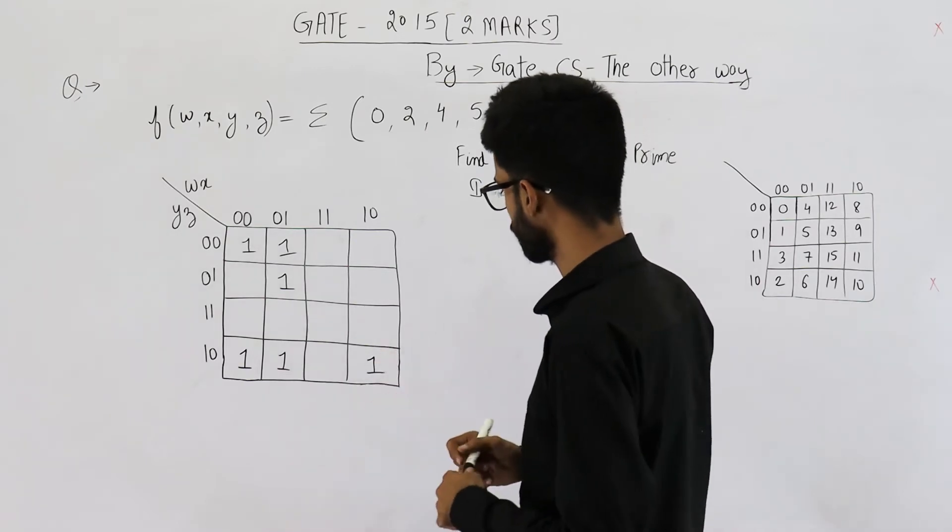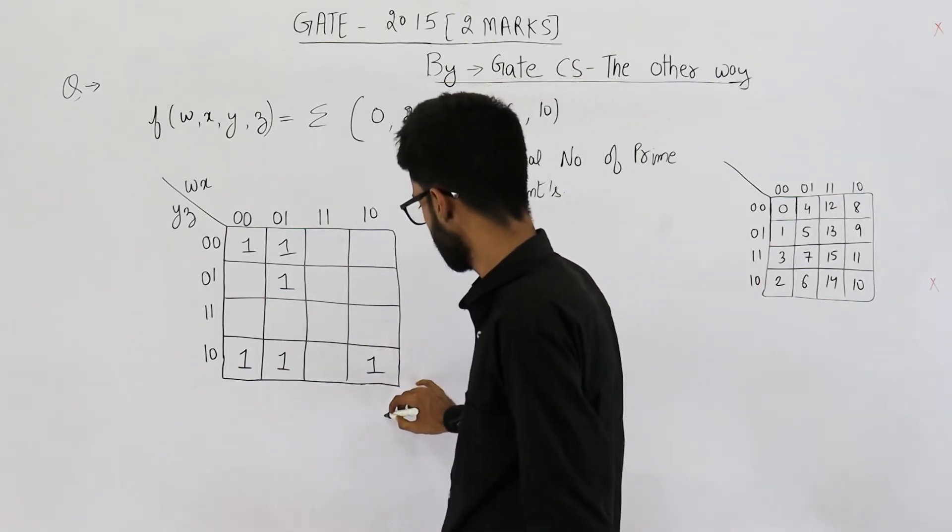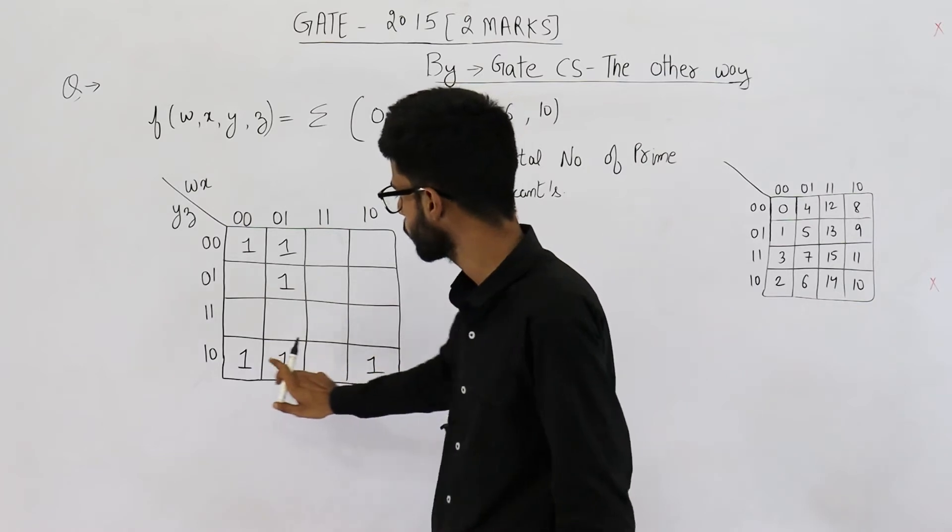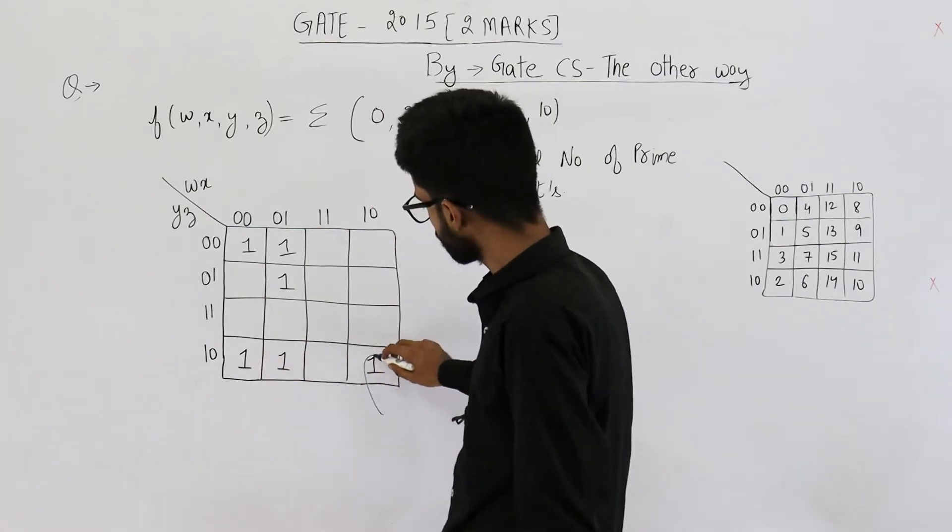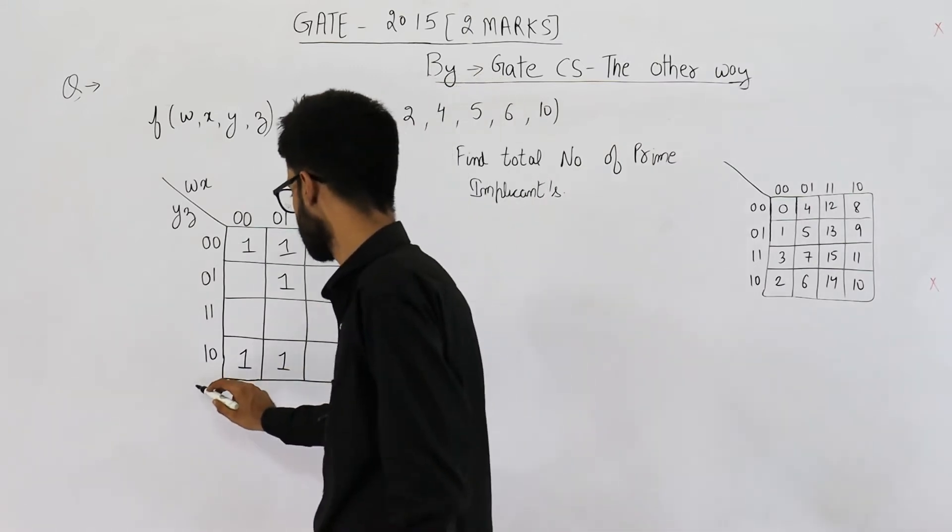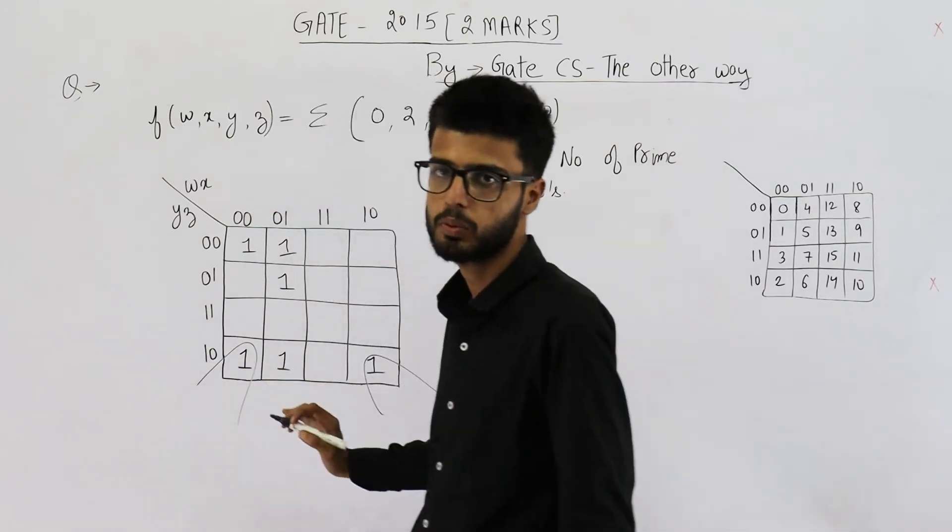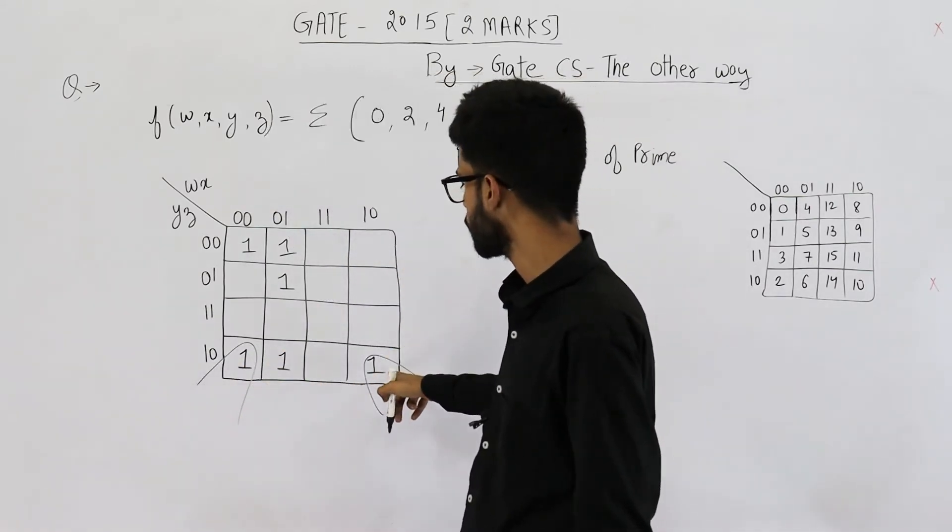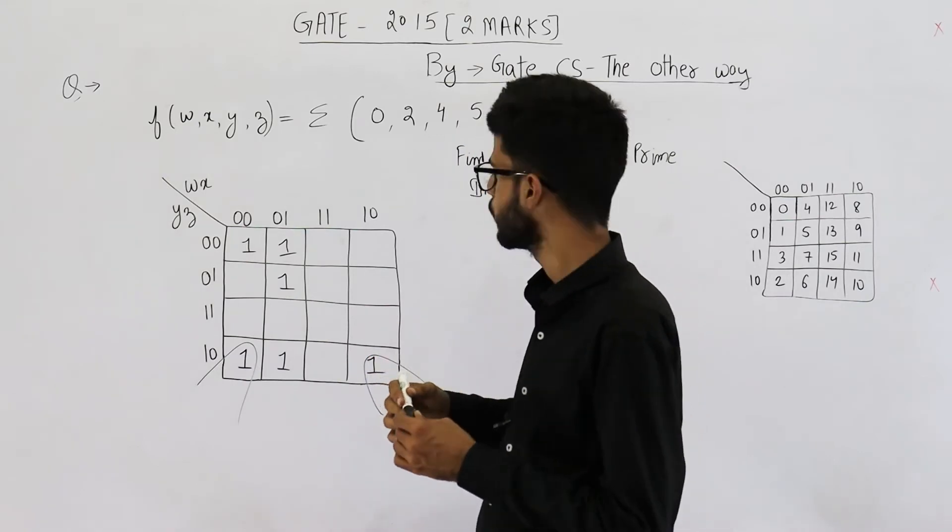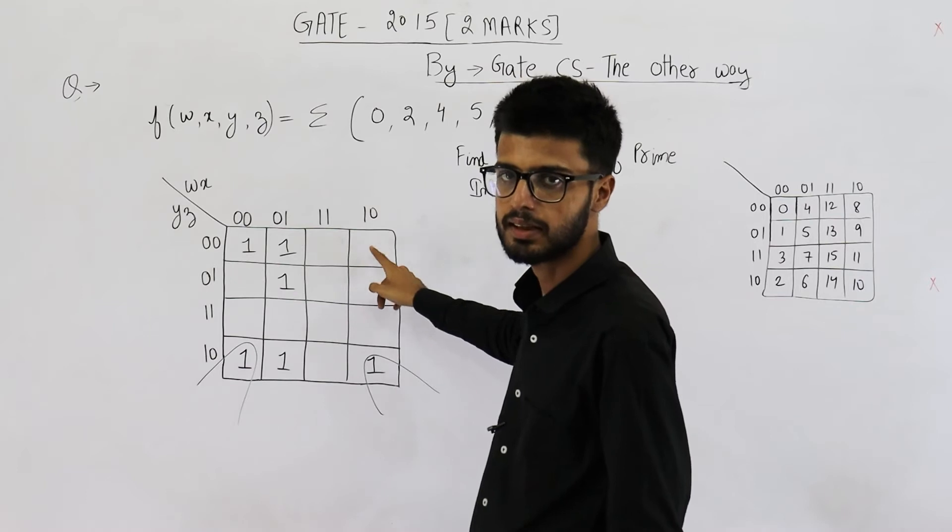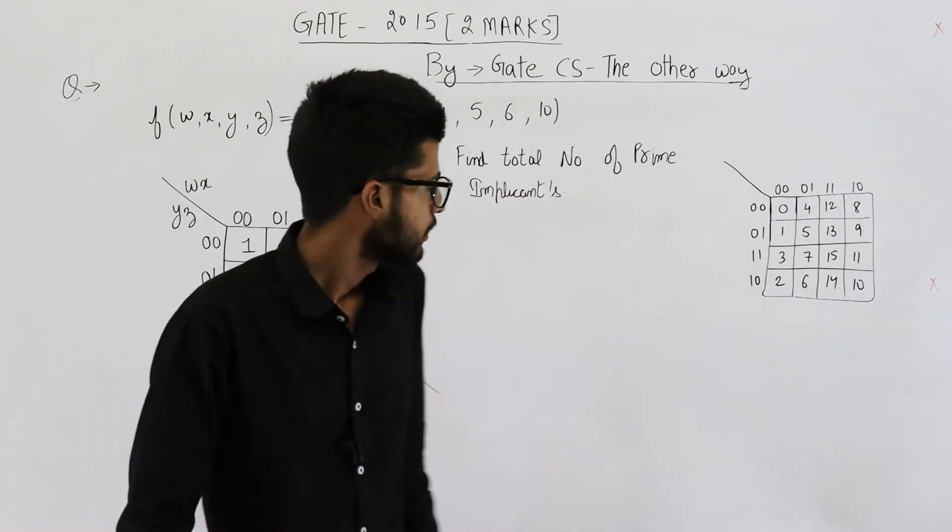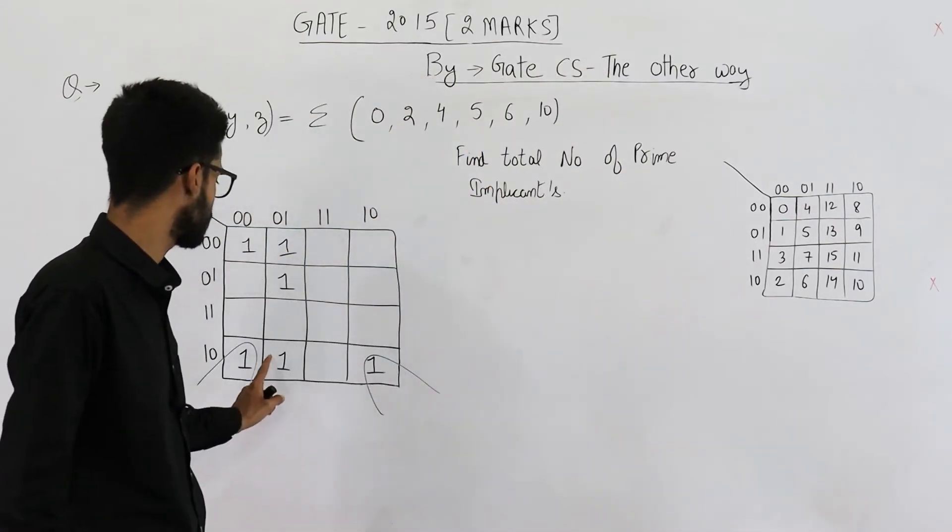So let's start from here to group this one. You can see we can form a group of 2, ok. And we always want the biggest group. This one is the biggest possible group, because after 2 we have a group of 4, but group of 4 is not possible here because this cell is empty.